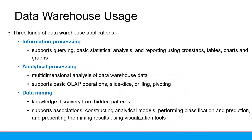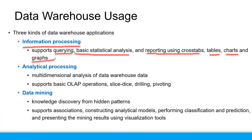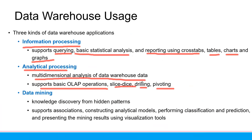There are three kinds of data warehouse applications. The first is information processing: it supports querying, basic statistical analysis, and reporting using cross-tab tables, charts, and graphs. The second is analytical processing: multi-dimensional analysis of data warehouse data that supports basic OLAP operations like slice, dice, and drill. These are the operations we learned before.